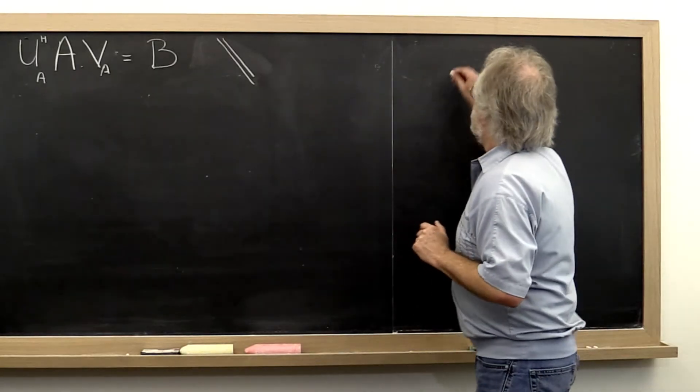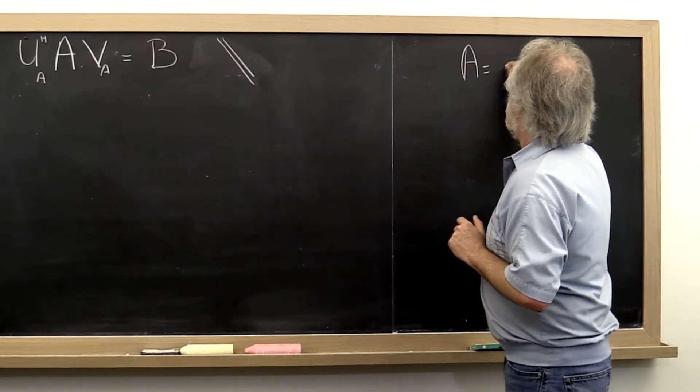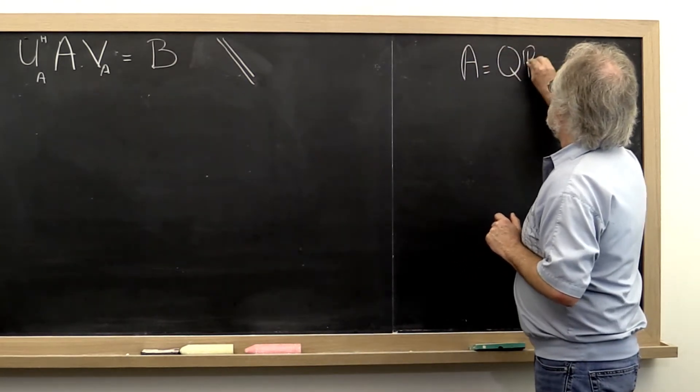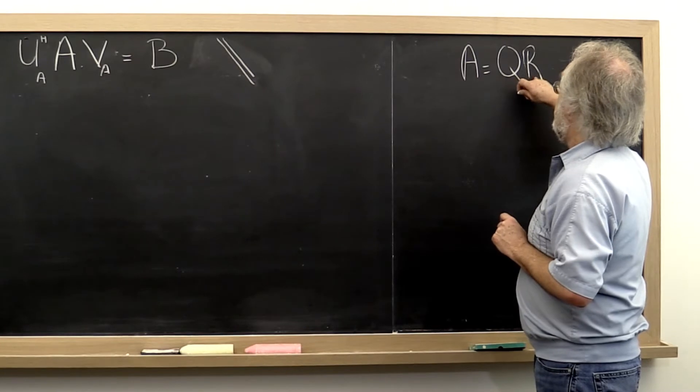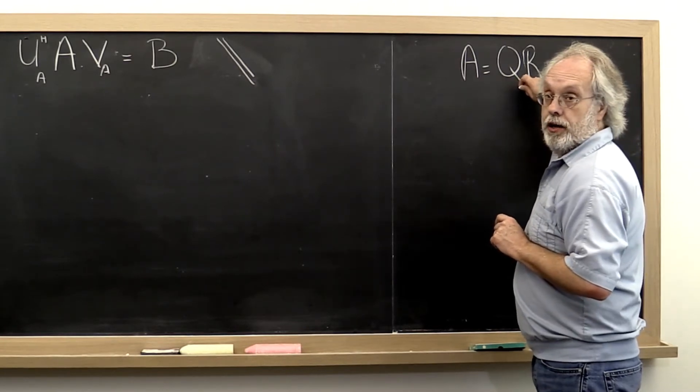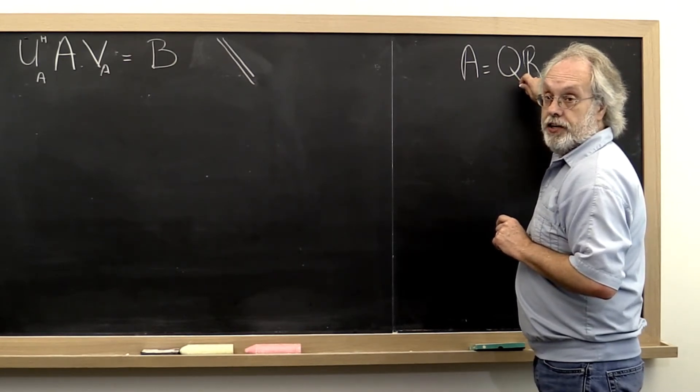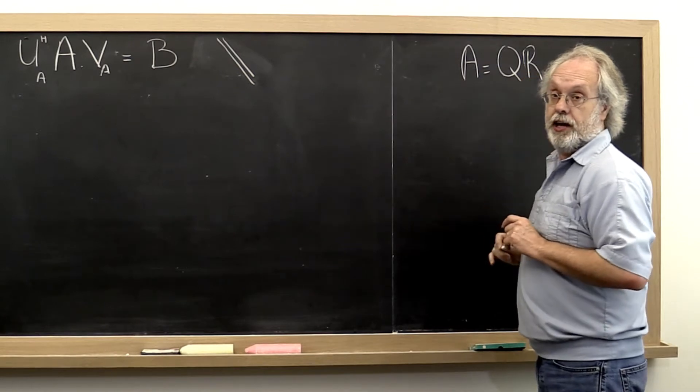So what we argued was that given matrix A, we should first compute the QR factorization and then take this matrix R and focus on computing the singular value decomposition of that upper triangular matrix.